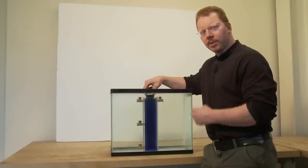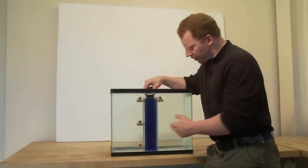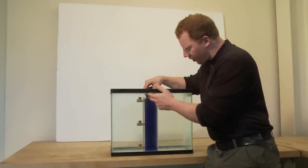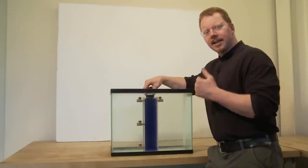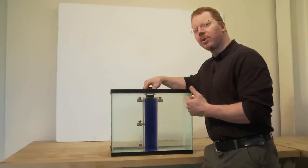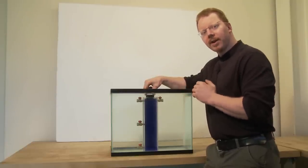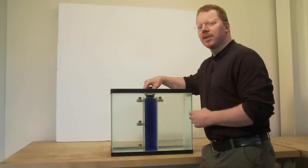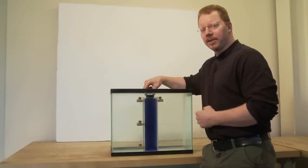It takes two things to produce air leakage: holes, and we have the potential for holes here with the ports in our box. It also takes a pressure difference across those holes to provide the incentive for air to move through the hole. And this is where it gets interesting. How do we get a pressure difference?